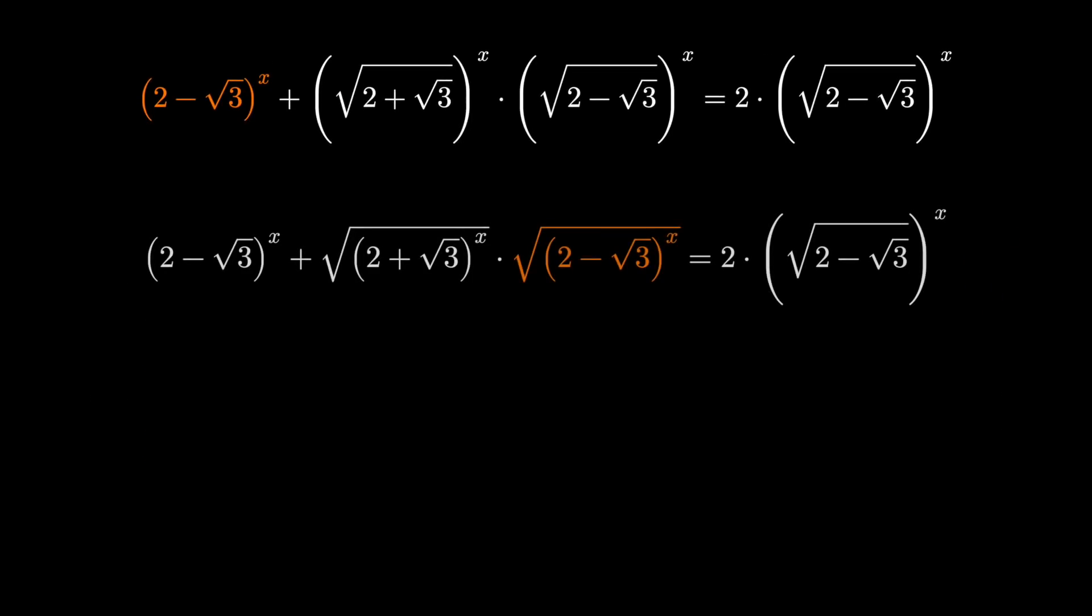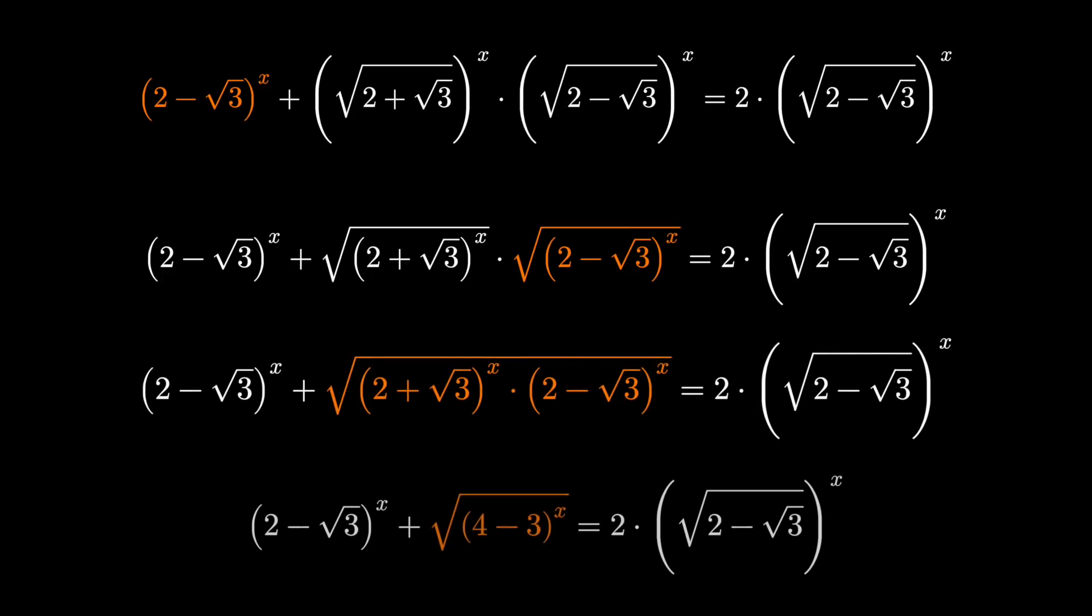We actually have a multiplication by the conjugate. This inner function is just going to be 4 minus 3 since 2 times 2 is 4, root 3 times root 3 is 3.